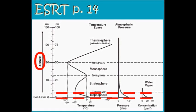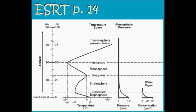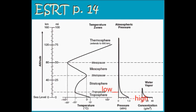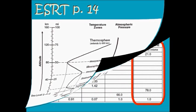The altitude of the troposphere is from zero, which is sea level, up to about 12 kilometers, or about 8 miles above sea level. The temperature decreases steadily throughout the troposphere. The air pressure, also known as atmospheric pressure, decreases steadily throughout the troposphere. And water vapor concentration also decreases as you increase altitude in the troposphere.